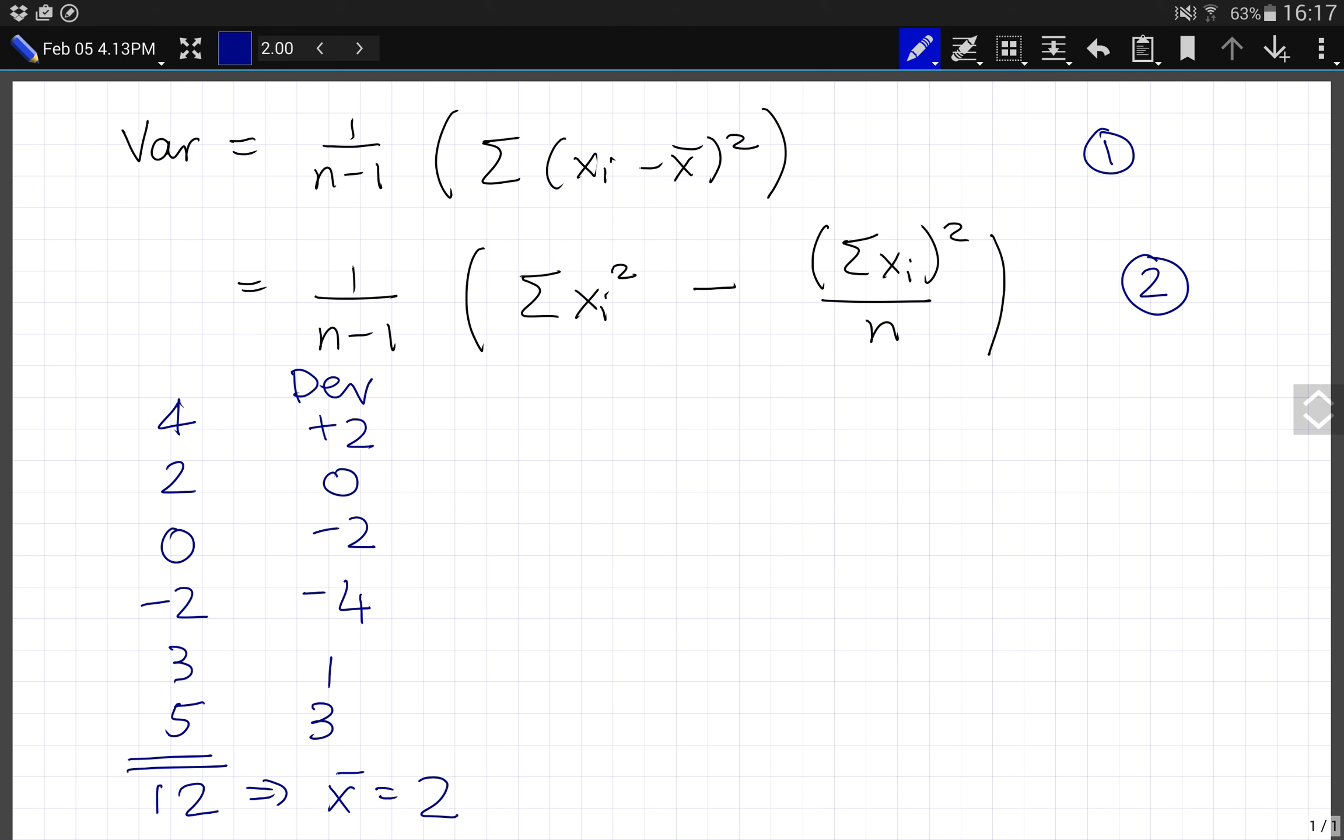So this means that the deviation squared is 4, 0, 4, 16, 1, and 9. This sums to 34, and therefore 34 divided by the degrees of freedom, which is 6 minus 1. This gives me that the variance is 6.8.